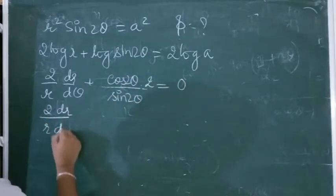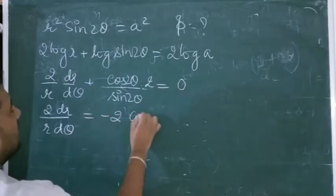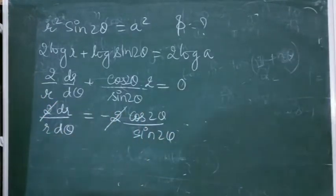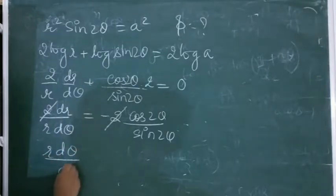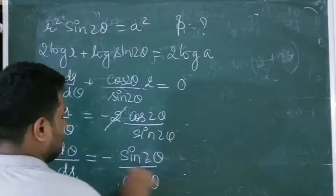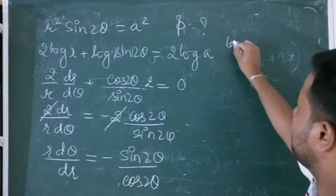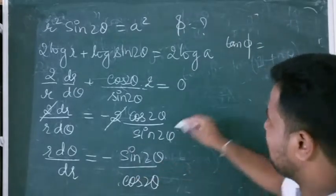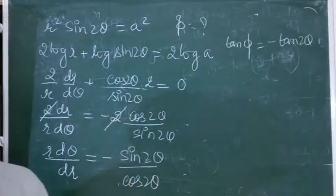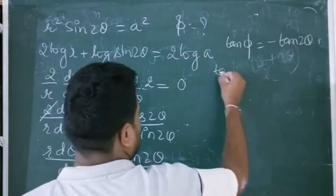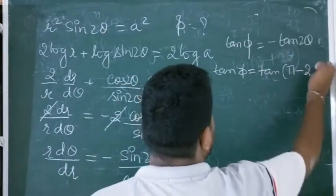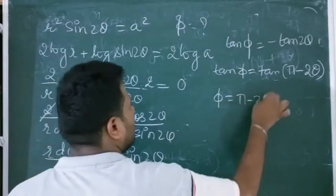The 2's cancel. Rearranging: (1/r)·dr/dθ = -cos(2θ)/sin(2θ). Reciprocating: r·dθ/dr = -sin(2θ)/cos(2θ) = -tan(2θ). So tan φ = -tan(2θ) = tan(π - 2θ). Comparing: φ = π - 2θ.